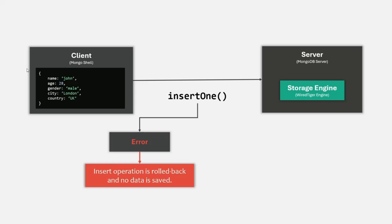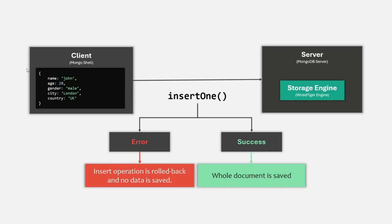In case of an insert operation, if the document is inserted partially, MongoDB will roll back that operation and no data will be saved in the database file. But if the document was inserted completely with no error, the whole document will be saved in the database file. Always remember that partial insertion, partial update, and partial deletion will never happen for a document. If it happens, MongoDB will roll back the changes that were saved in the database. This is called atomicity.